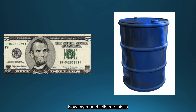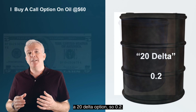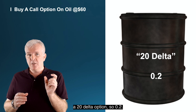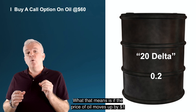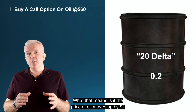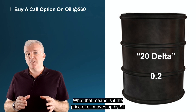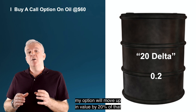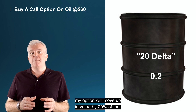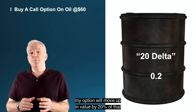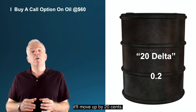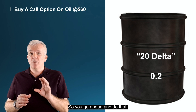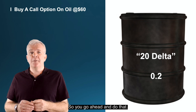My model tells me this is a 20 delta option, so 0.2. What that means is if the price of oil moves up by $1, my option will move up in value by 20% of that — it'll move up by 20 cents.